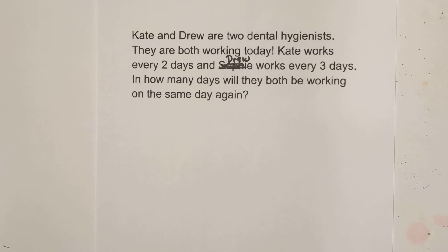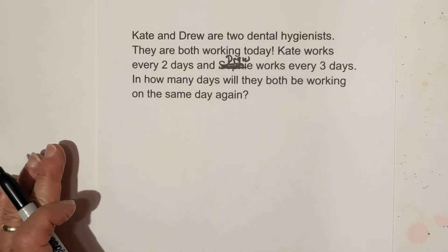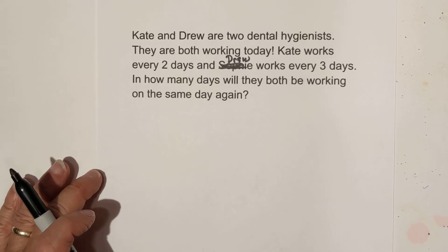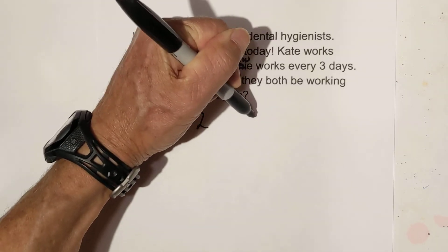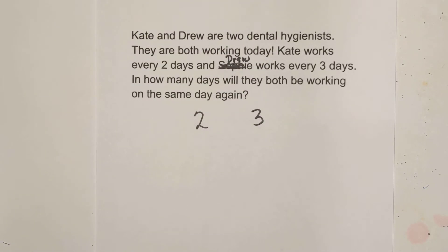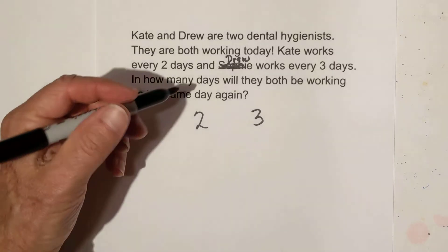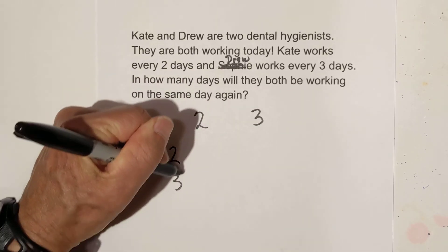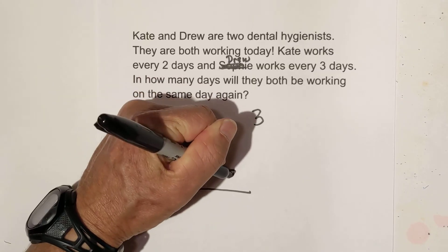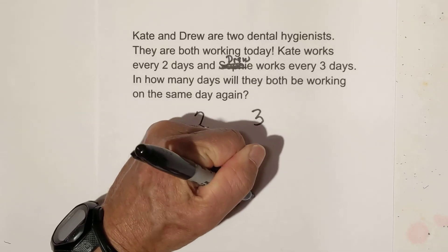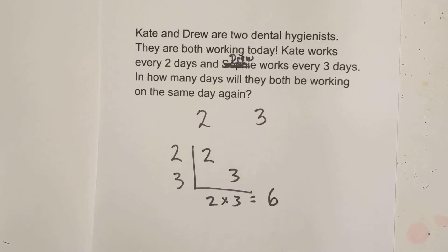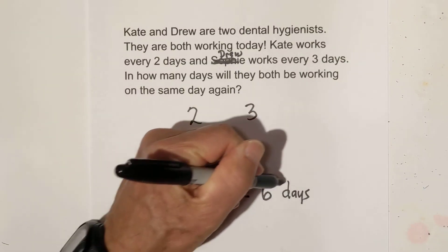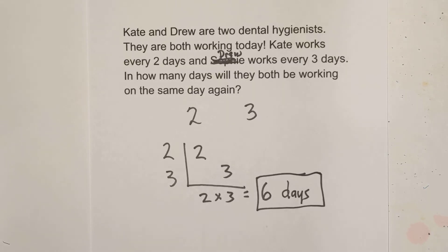This is an LCM problem because you're syncing up the minimum number of days before they will work together — it's a minimum problem, just disguised. So we need to find the LCM of two and three. Using the factor tree, two is prime and three is prime. I'll put them in the chart, bring down the two and the three, and multiply them together. The LCM is six, which tells us that in six days they will be working together once again.